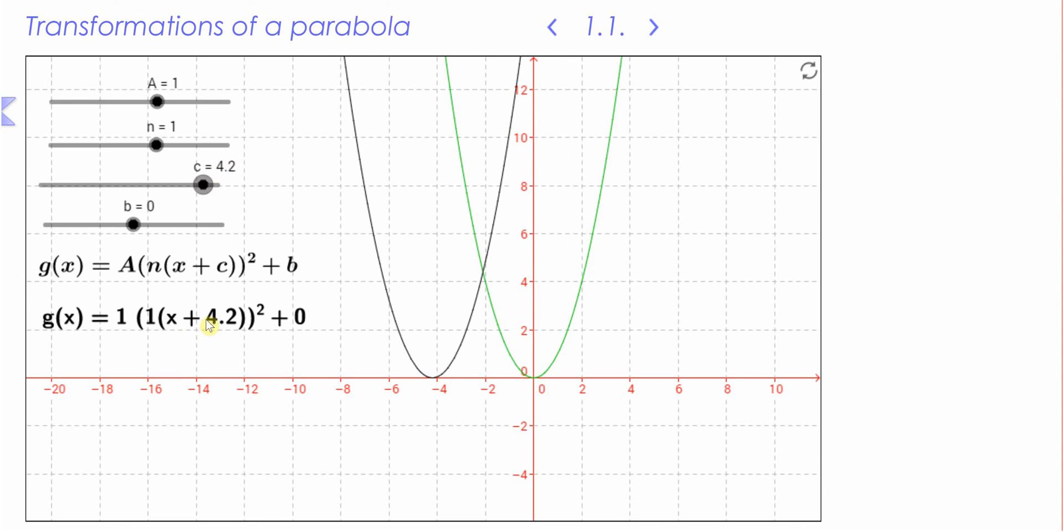So here c = +4.2, but it's moved -4.2 on the horizontal axis. So when I make it negative, it moves in the positive direction. Let me make that 1 again.